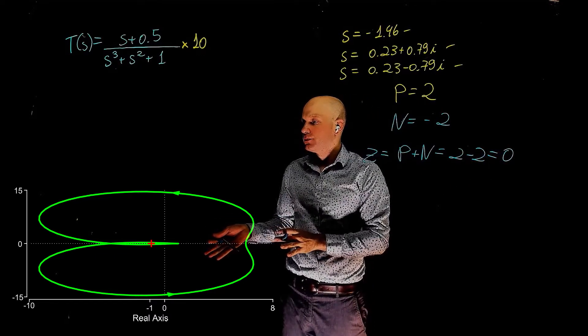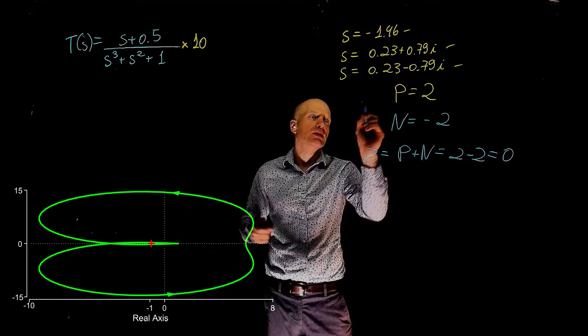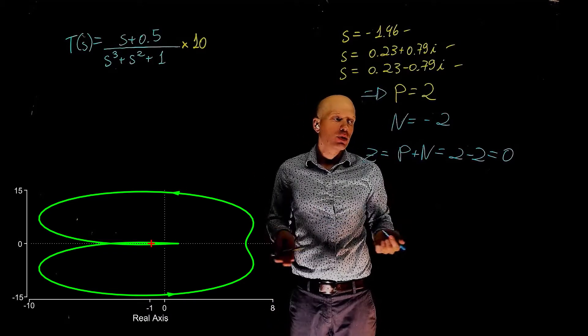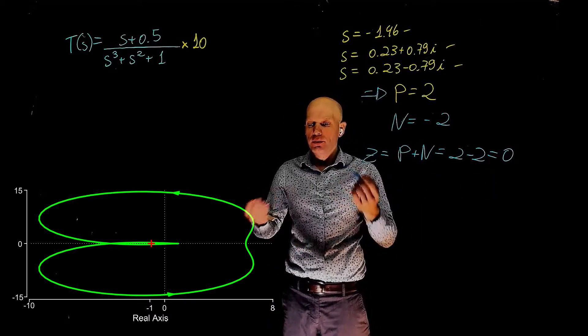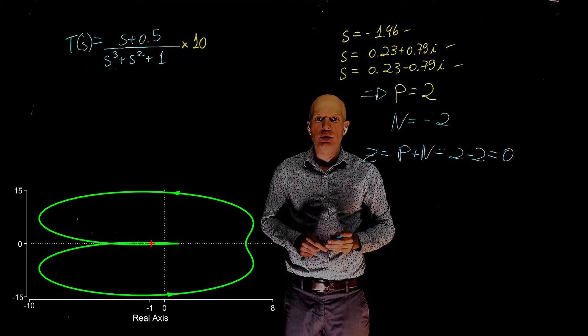So this system is open loop unstable, but is closed loop stable if put in a negative unit feedback loop.